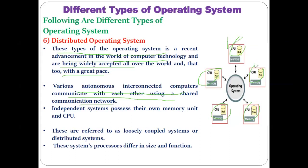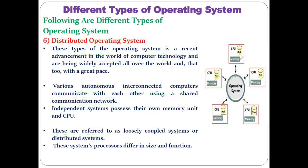Various autonomous interconnected computers communicate with each other using a shared communication network. All the computers share the same operating system installed at some remote location. Each individual computer has its own CPU, disk, and memory, but everybody shares the same kind of operating system. This whole scenario is referred to as a distributed operating system, where the operating system is distributed among all the client computers. These systems are referred to as loosely coupled systems.